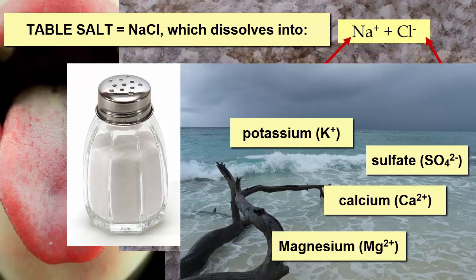So ocean water's saltiness doesn't taste exactly the same as table salt. Seawater from all over the world tastes very similar, but there are differences depending upon what other ions are also dissolved in the water. While the major ions are the same and found in the same proportion, trace ions can vary and create a unique fingerprint or taste for each ocean location.